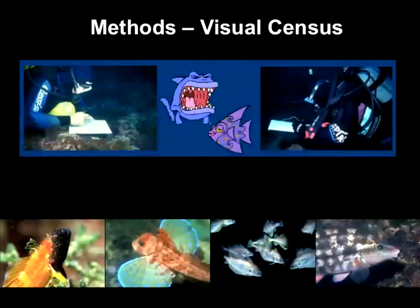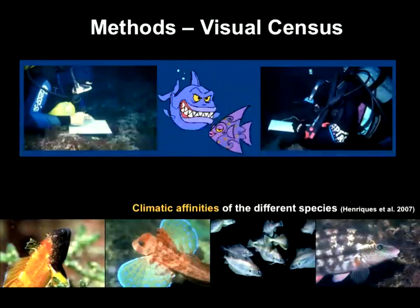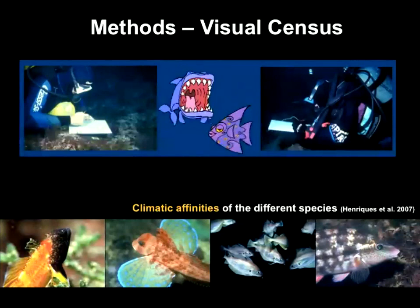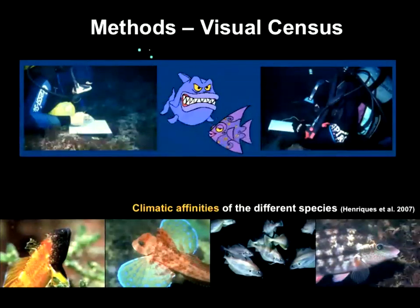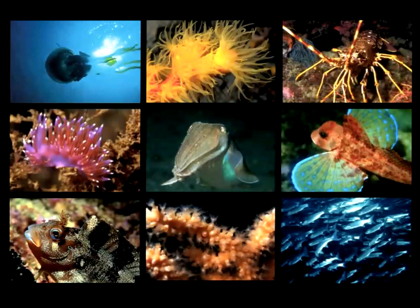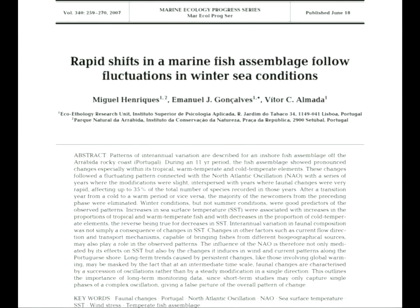We use basic visual census methods in a standardized way throughout the years to monitor how fish communities change and how oceanographic patterns influence them. Each species has its climatic affinity. Species with ranges spanning from Scotland to South Africa are largely unresponsive to changes, whereas species whose distribution limits fall within the region — coming from either the north or south — are potentially much more responsive. One key finding is that winter sea conditions are the main driver of rapid shifts in these coastal assemblages.